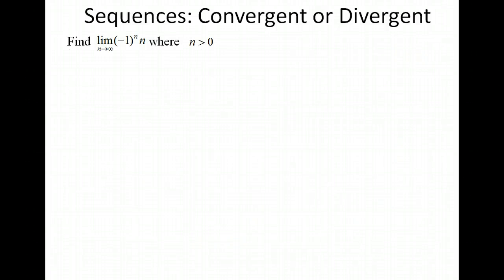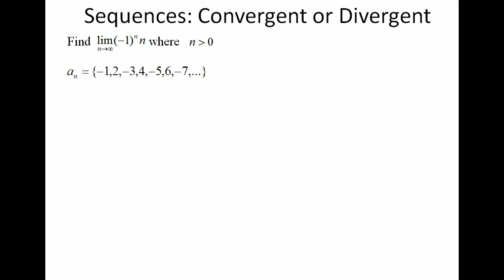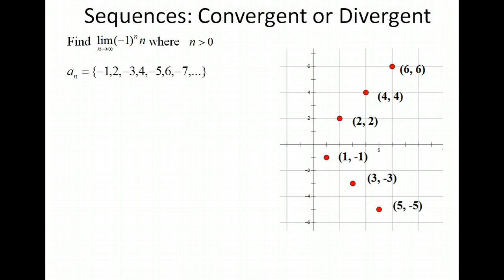Let's take a look at another example. Suppose we have the formula (-1)^n times n that represents the terms of our sequence. While looking at the terms, you can quickly see that these terms are alternating in sign, going from negative to positive, negative to positive. Let's see what happens to the terms when we graph them. You can see that the even terms are heading toward positive infinity while the odd terms are heading toward negative infinity.